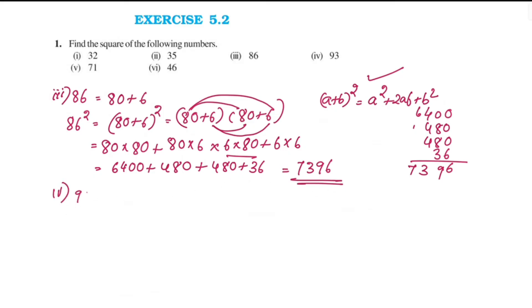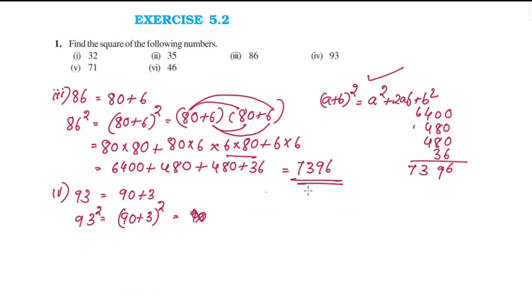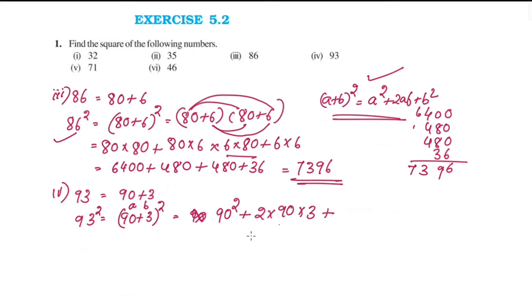Fourth question is 93. We write 93 as 90 plus 3. So 93 squared equals (90 + 3) whole square. Using (a + b)² = a² + 2ab + b², where a is 90 and b is 3.